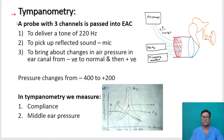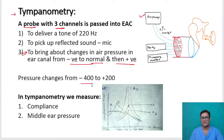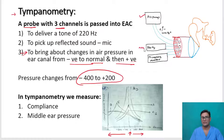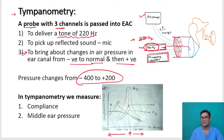What is the instrument used in tympanometry? A probe with three channels is passed into the external auditory canal. One channel is an air pump to bring about pressure changes from minus to normal and then positive — from minus 400 to plus 200 mm of water. We also have a system to send a tone of 220 Hz through the speaker. A tone of 220 Hz — this may be asked in the NEET PG. And then we have a microphone to record the sound reflected from the tympanic membrane and the tympano-ossicular system.